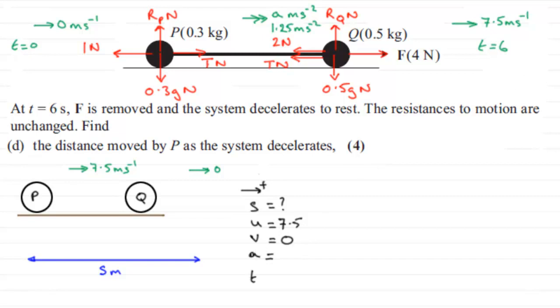So let's just mark on forces now on these particles. Now we know that for Q, F has been removed, but we're told that the resistances to motion are unchanged. So there's going to be the resistance on Q of 2 Newtons. Just mark that one in as 2 Newtons. Also, there'll be on Q, the weight, acting downwards. Mass was 0.5, so it's still going to be 0.5 g Newtons. There'll be a reaction as well coming up from there. So I'll just mark that in, call that RQ then, RQ Newtons.